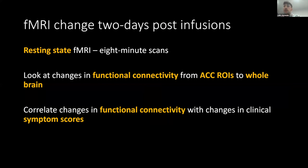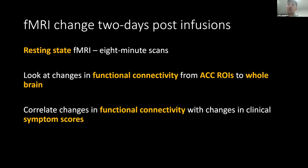In terms of imaging changes, we did resting state fMRI — an eight-minute sequence — and we looked at changes in functional connectivity by correlating patterns of BOLD signals from the three ACC regions of interest to the whole brain, so it's an ROI-to-whole-brain analysis. We could then correlate changes in functional connectivity with any significant regions to changes in symptom scores, to assess whether any of these imaging changes are clinically relevant.